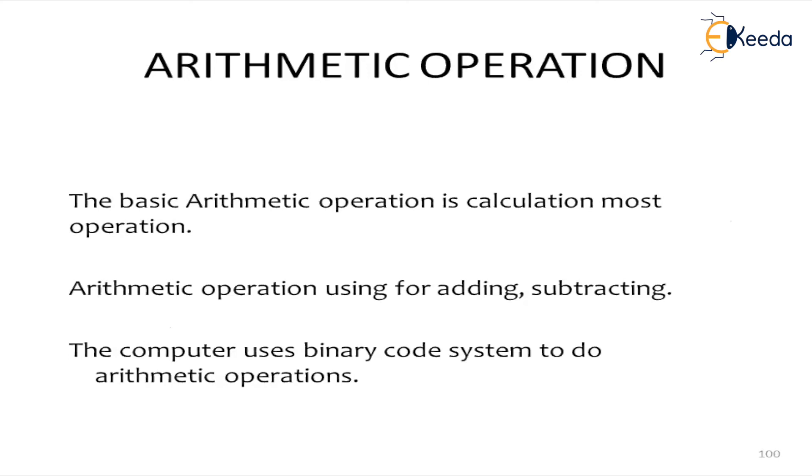What do you mean by arithmetic operation? The basic arithmetic operation is calculation, most commonly addition and subtraction. When you're performing operations of addition and subtraction, the computer uses binary code system to do the arithmetic operations. The binary code will be in the form of zeros and ones.